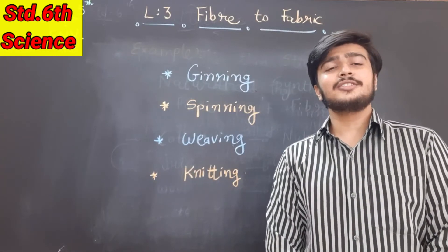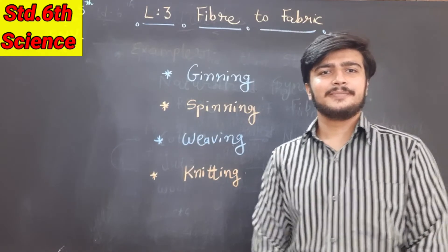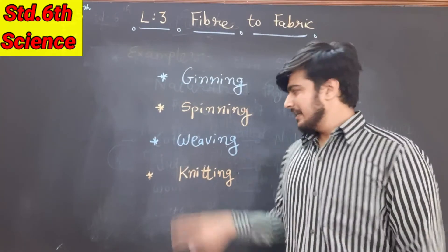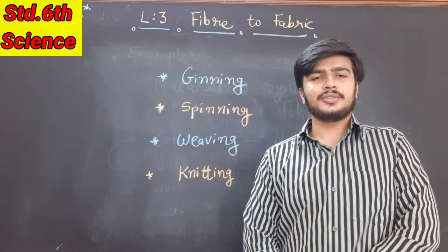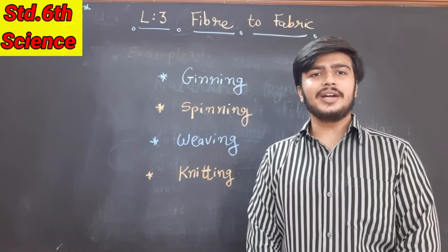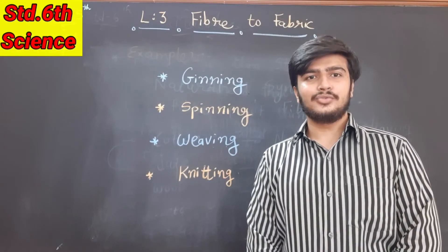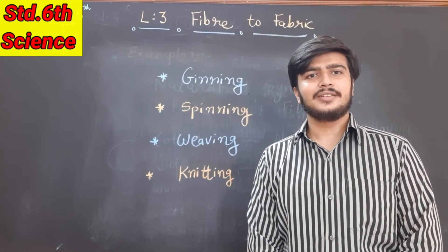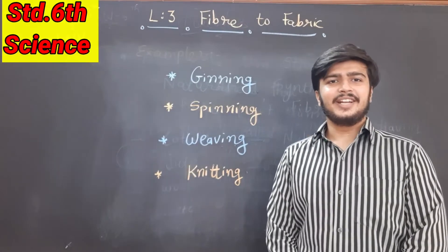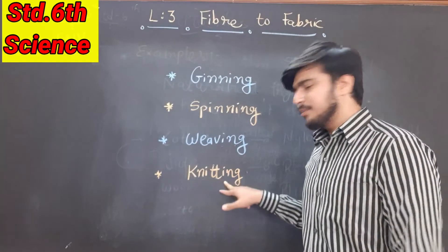The second process is the spinning process. Making yarn from the fiber is known as the spinning process. The third process is the weaving process. In this process, two sets of yarn are arranged together to form fabric. This is known as the weaving process.